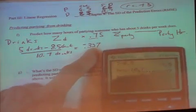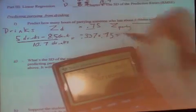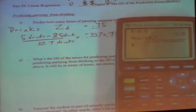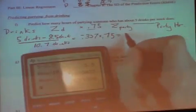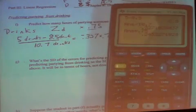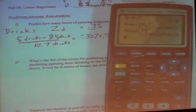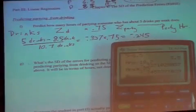The next step is to multiply the z-score by r, which is 0.75. Multiplying by 0.75 brings the z-score closer to zero. So we multiply by 0.75, getting approximately negative 0.245. Leave all the decimal places in for accuracy. This z-score tells us how many standard deviations that person is below average in party hours.